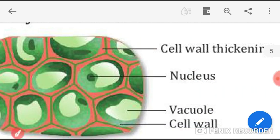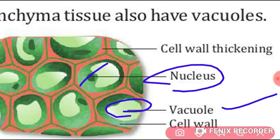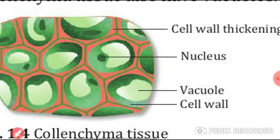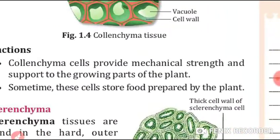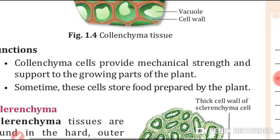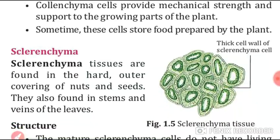The thick cell wall is visible. There is also a nucleus, a big vacuole, and the cell wall is labeled. The functions of colenchyma cells are: they provide strength and support to the growing parts of the plant, and sometimes these cells also store food.